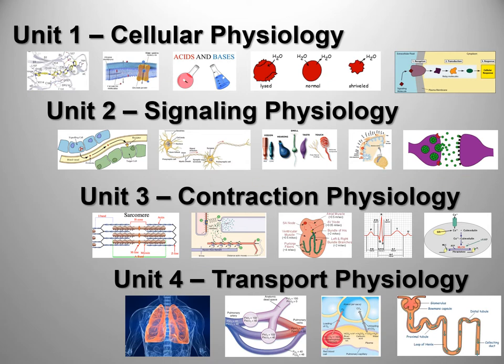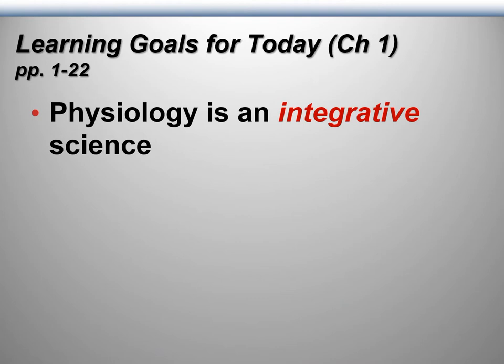We're going to start with cellular physiology, chapter one, and the themes of physiology. The reading assignment for chapter one is pages one through twenty-two — not a very complicated chapter, just a few things to integrate. The learning goals here are what we would call scalable themes, which you might have heard if you've had Bio 165.